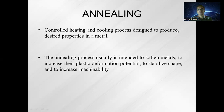In annealing, the metal is heated above its austenitizing temperature using a furnace — either a cupola furnace or an electric furnace — then held at that temperature for a particular period of time, then cooled by switching off the furnace and cooling inside the furnace itself. This process is called the annealing heat treatment process, and it results in refinement of the grains.